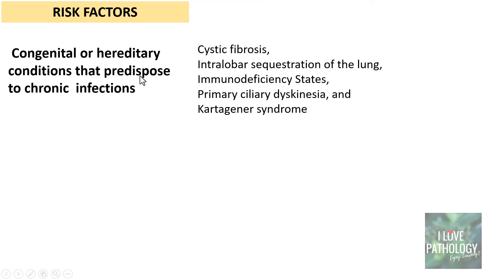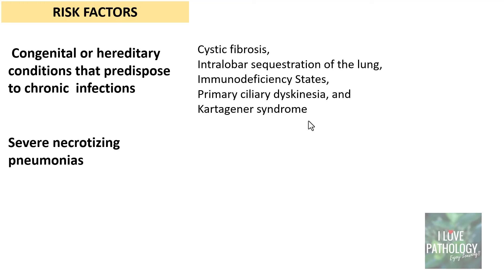These conditions include cystic fibrosis, intralobar sequestration of the lung, various immunodeficiency states, primary ciliary dyskinesia and Kartagener syndrome. In all these conditions, there is impaired mucociliary clearance mechanism and the defense mechanism is lost, predisposing to the development of chronic or recurrent infections. The second important risk factor is severe necrotizing pneumonias, which can be due to bacterial, viral, or even fungal infections.